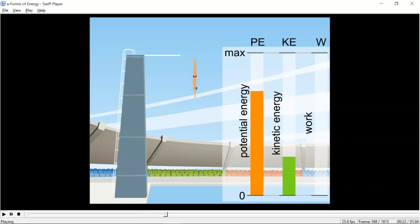At the same time, his kinetic energy increases as he gains speed heading downwards. Potential energy is transformed into another form, kinetic energy.